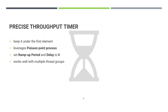An important point when working with this timer is you have to keep it under the first element in your test plan. If you are not able to add it to the first element due to certain business reasons, you can leverage a dummy sampler request — add a dummy sampler and place the Precise Throughput Timer underneath.